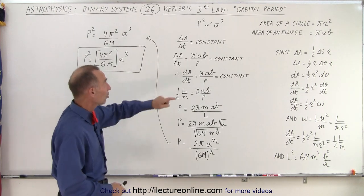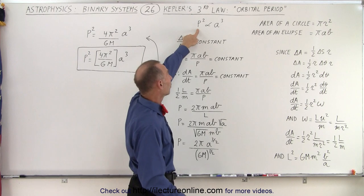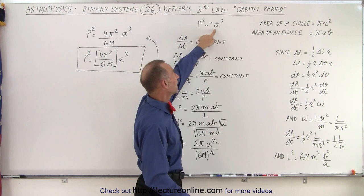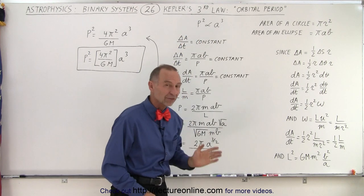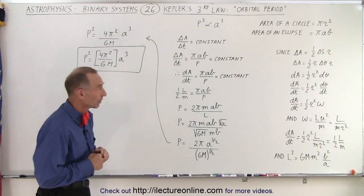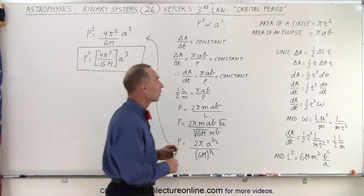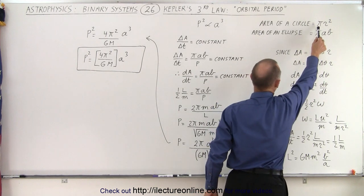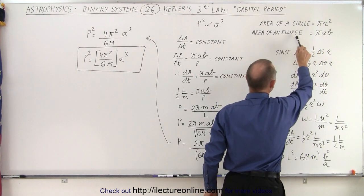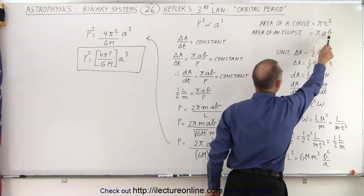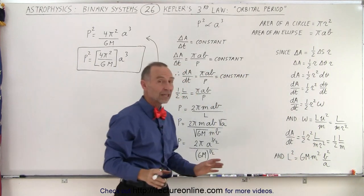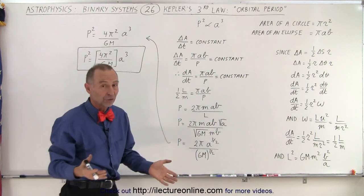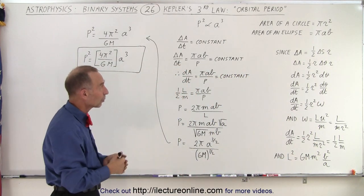He discovered the relationship between the period of the orbital motion to the average distance between the sun and the planet, the semi-major axis. So if we keep in mind that the area of the circle is pi r squared, which most people know, and the area of the ellipse is simply pi times a times b. Of course you can see that if a equals b you end up with pi r squared, a circle again.